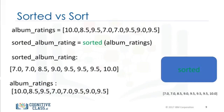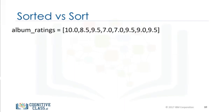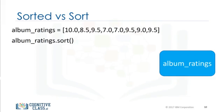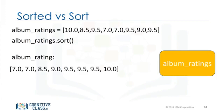If we use the method sort, the list album_ratings will change and no new list will be created. In this case, the rectangle represents the list album_ratings. When we apply the method sort to the list, the list album_rating changes. Unlike the previous case, the list album_rating has changed. In this case, no new list is created.